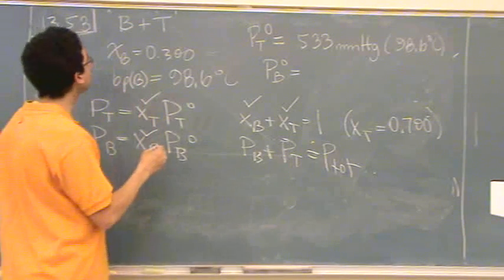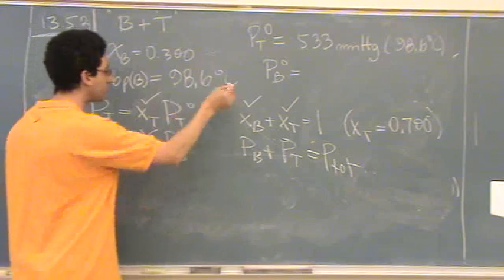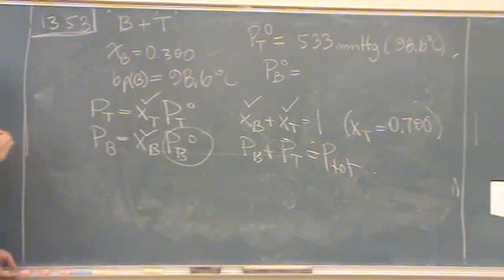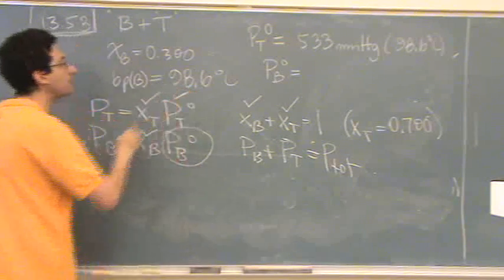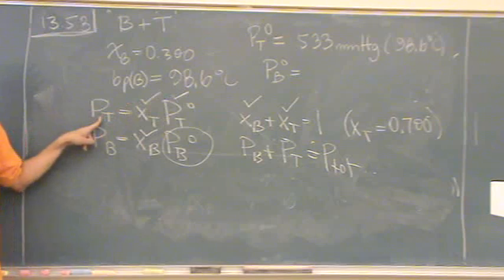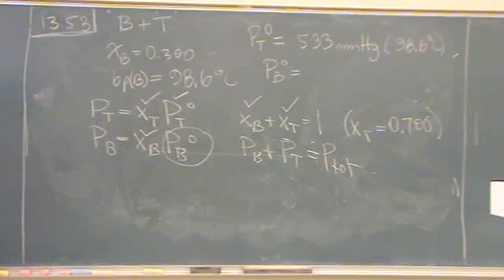We've also got Pb. No, we don't. That's what we want. We want this one right there. We also have Pt naught. That's the one we have. So that means we have Pt naught. That means I can find Pt. So that's good. Okay, let's do that.